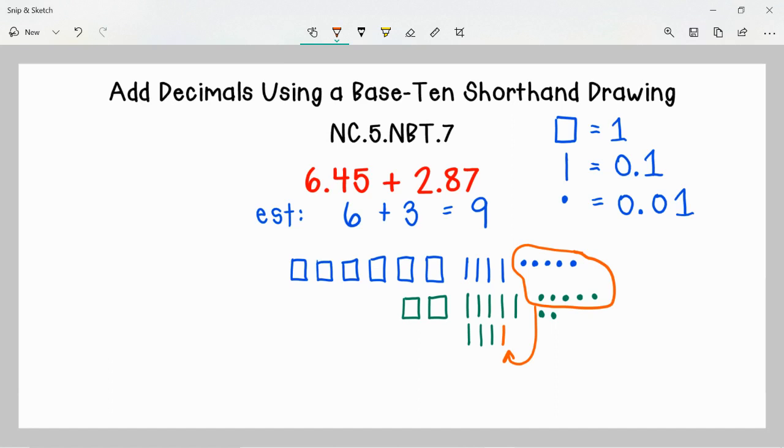So I'm going to group together 10 tenths. I know down here at the bottom I have 9 tenths already, so I'm just going to grab one of these from up top where I had 4 tenths. So 10 tenths grouped together, and that 10 tenths gives me a new whole. And then I have just 3 tenths remaining, which is not enough to regroup for another whole.